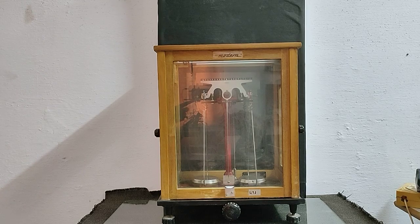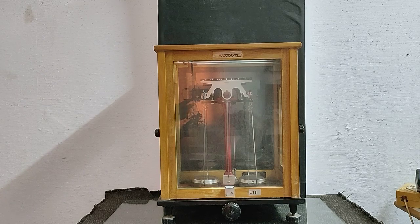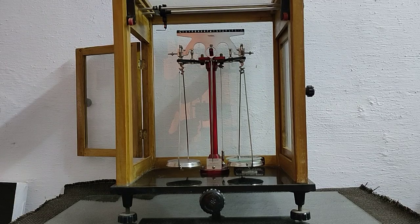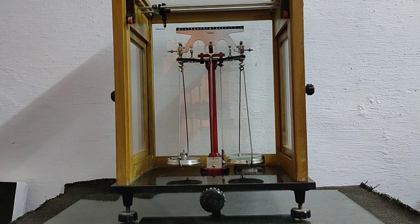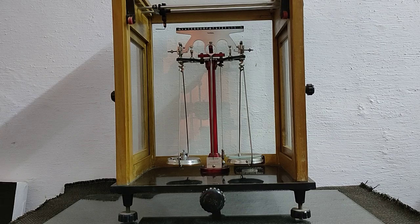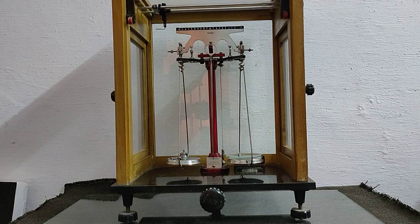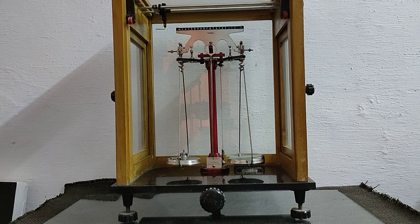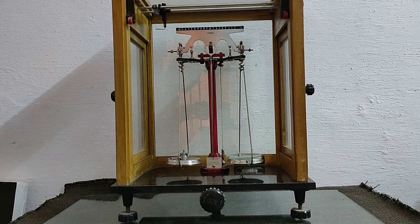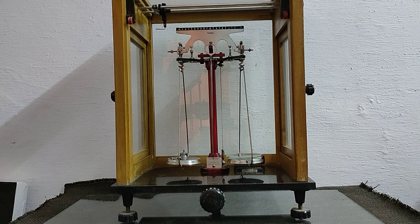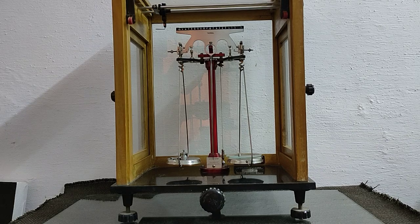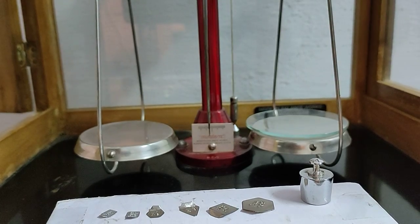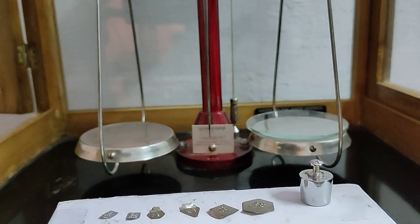Chemical balance has four adjusting screws, enclosed in a wooden box having two doors. Keeping watch glass on right hand side, keeping weights at left hand side. Pointer comes at zero means it is exactly balanced, and our weight is 20.890 gram weight of watch glass.